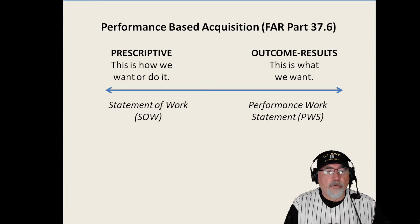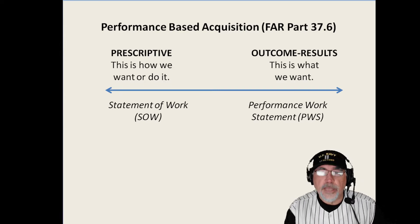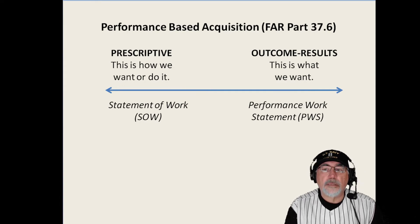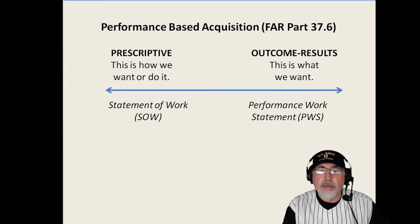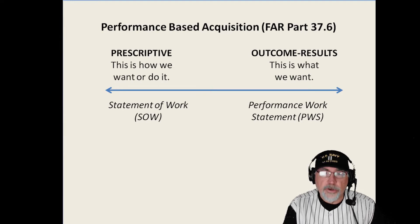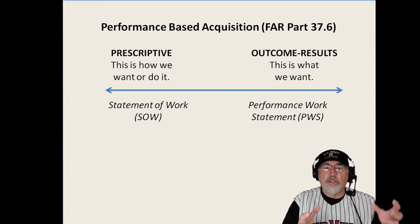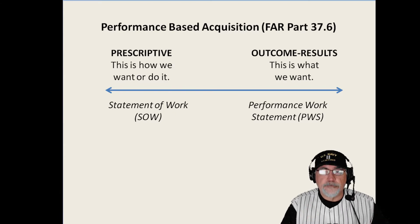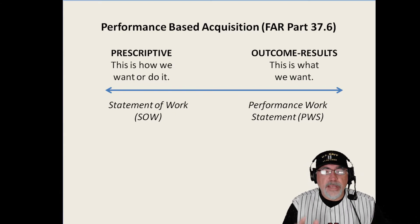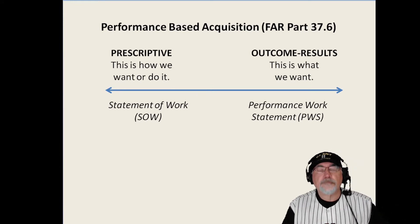To give you some balance: a statement of work really focuses on a prescriptive model of contracting. For example, construction contracting — where you have drawings — is prescriptive about what we want the contractor to do. We don't want them to deviate from the drawings, so we say this is what you're going to do and this is how you're going to do it, because we want the outcome based on those drawings.